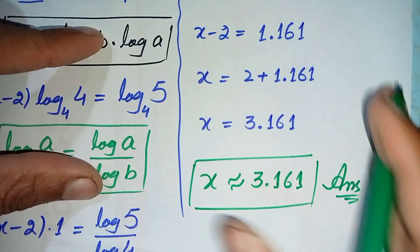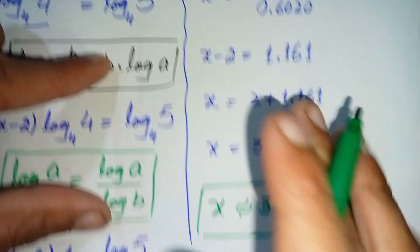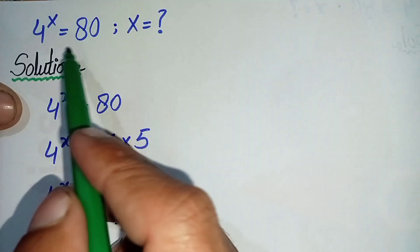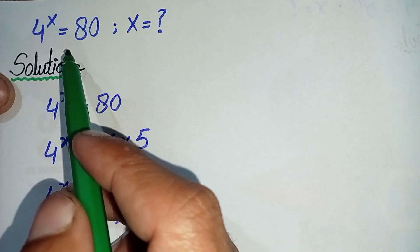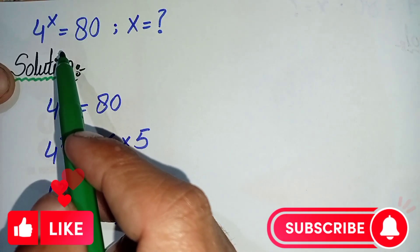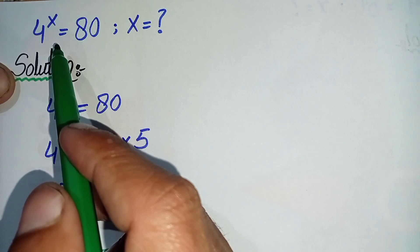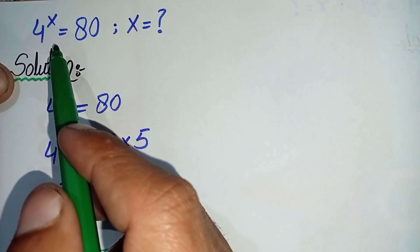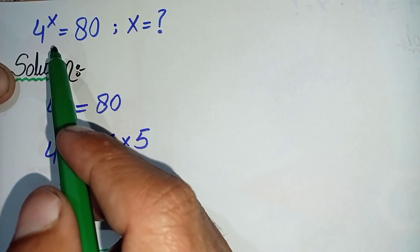So x approximately equals 3.161 is the final answer to this exponential math problem. Don't forget to subscribe to the YouTube channel for more interesting math videos. Thank you so much for watching — take care, see you in the next video, bye bye.